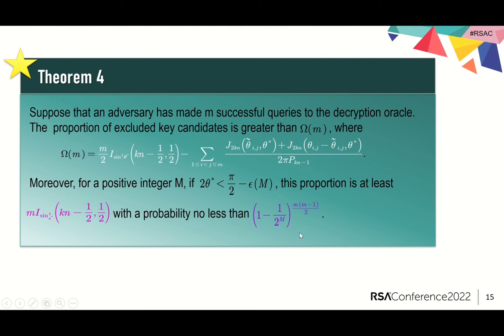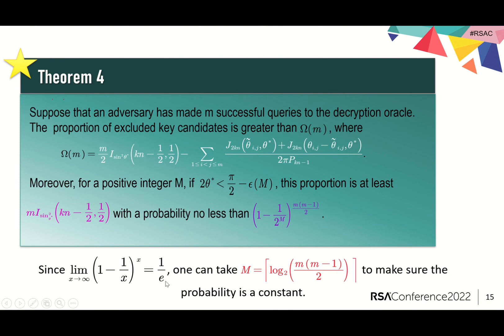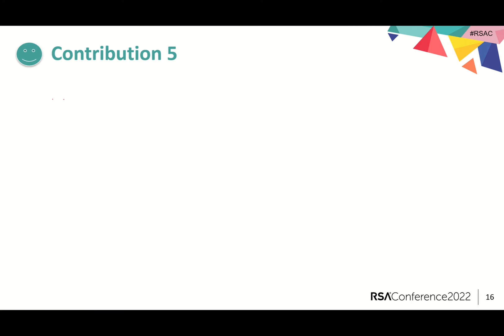To make sure this value is a constant, using the limit formula of epsilon_m, we can take m to be this value.